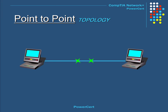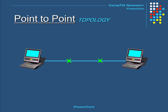A point-to-point topology is two hosts that are directly connected to each other using a single cable. These hosts could be computers, switches, routers, servers, and so on. So a point-to-point topology is the simplest form of topology there is.